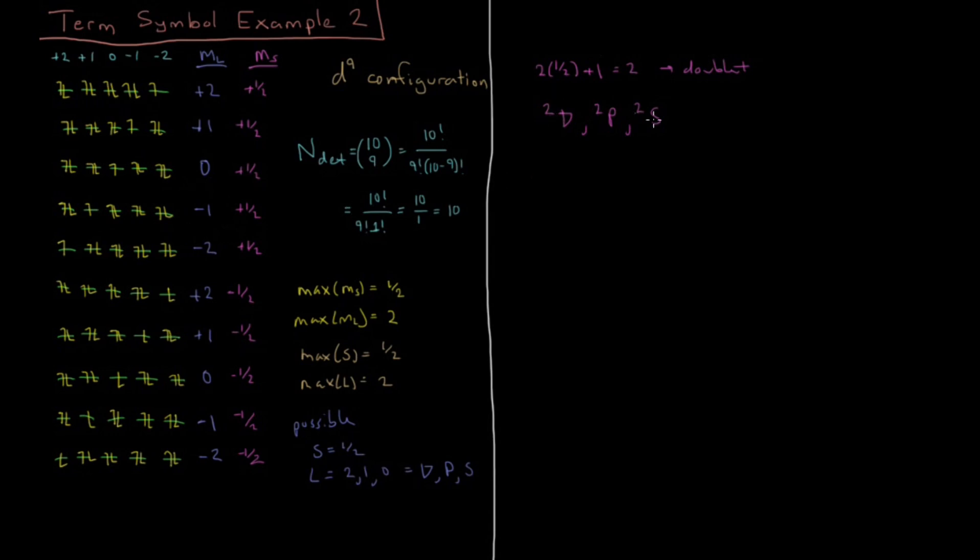We want to go from what is possible to what is. We start with the term symbol with the largest L value, which is D with L equals 2. We have L equals 2, S equals 1/2. We're looking for M_L equals plus 2 and M_S equals plus 1/2 for there to be a doublet D term symbol. That's the first one I've got, so I do have a determinant consistent with doublet D. I'll list that on my confirmed term symbols: doublet D.